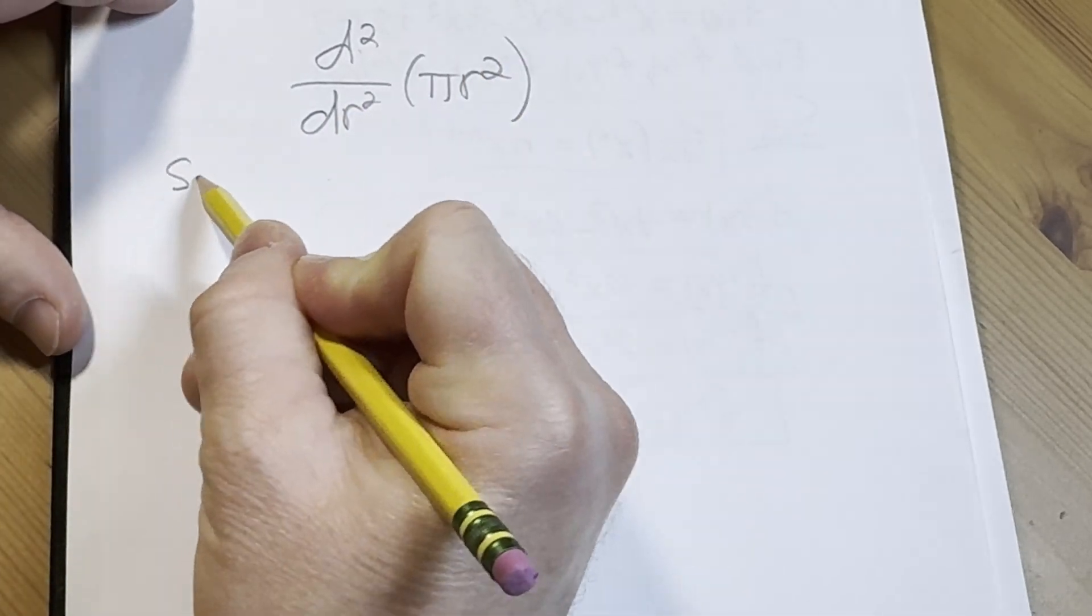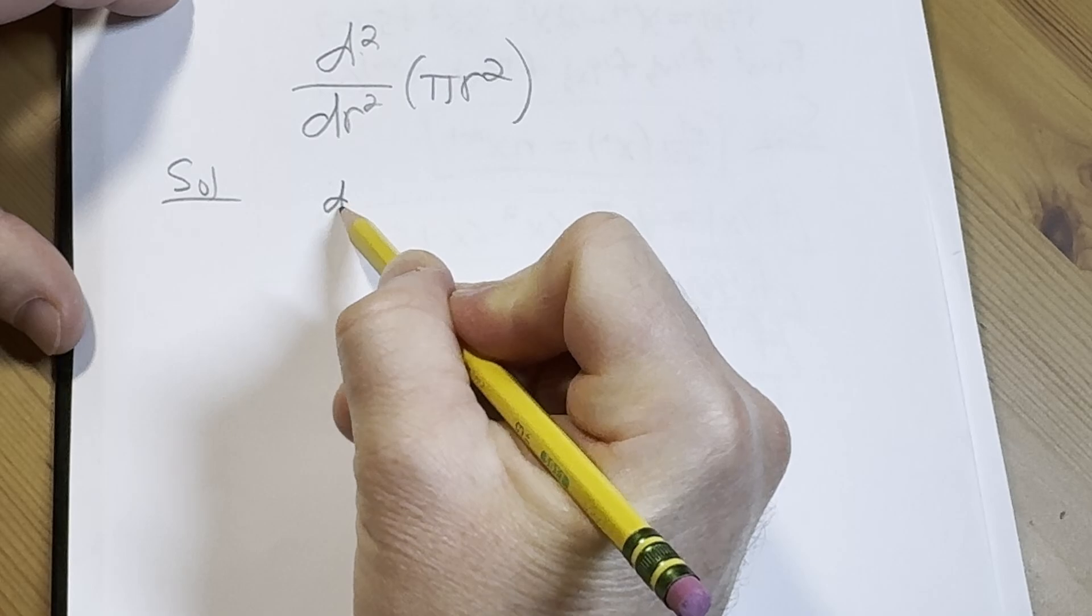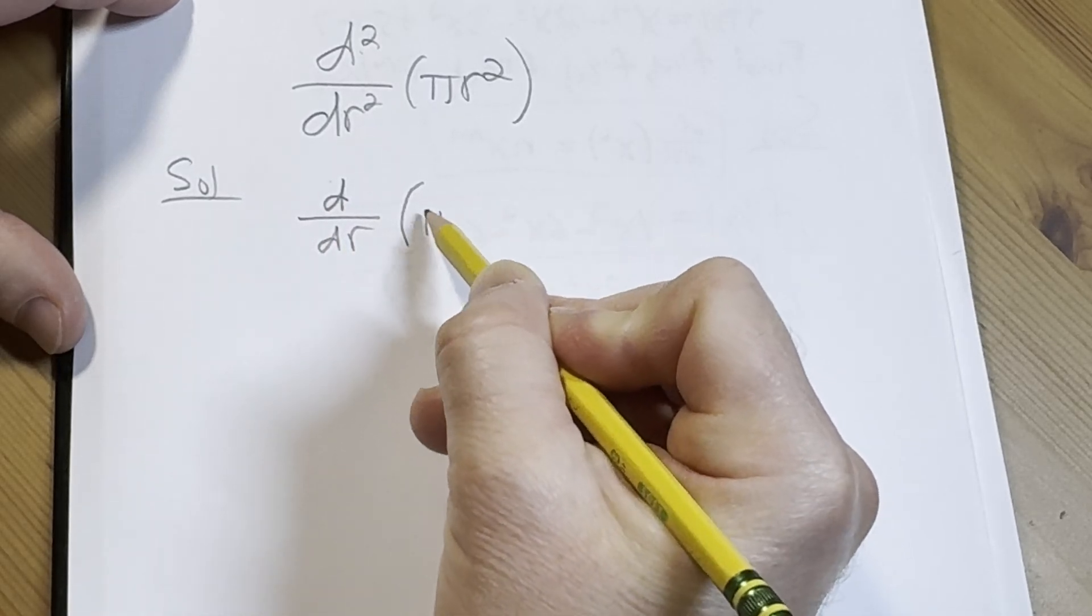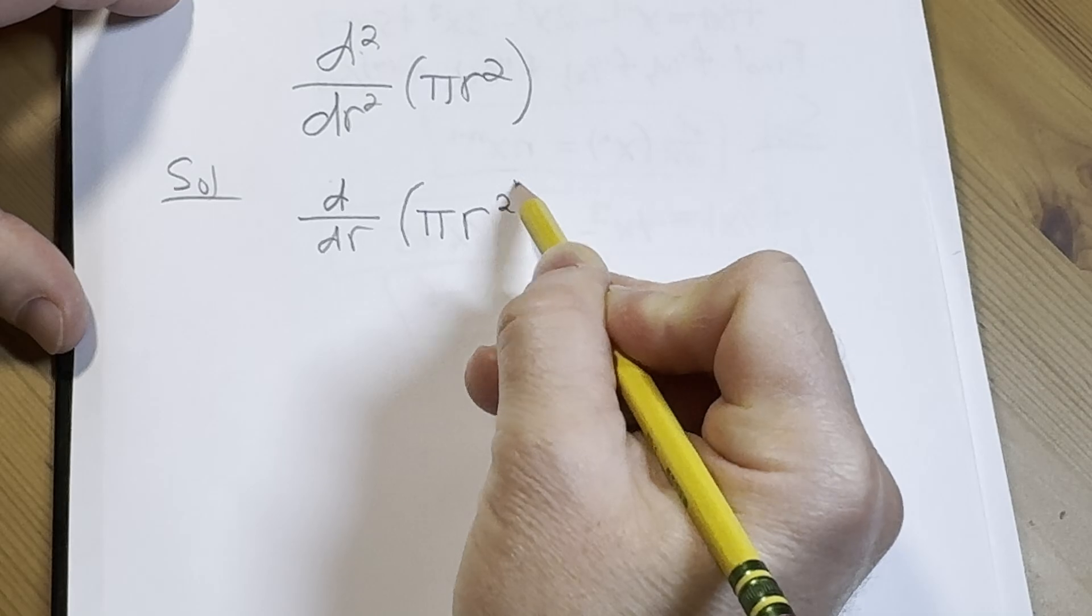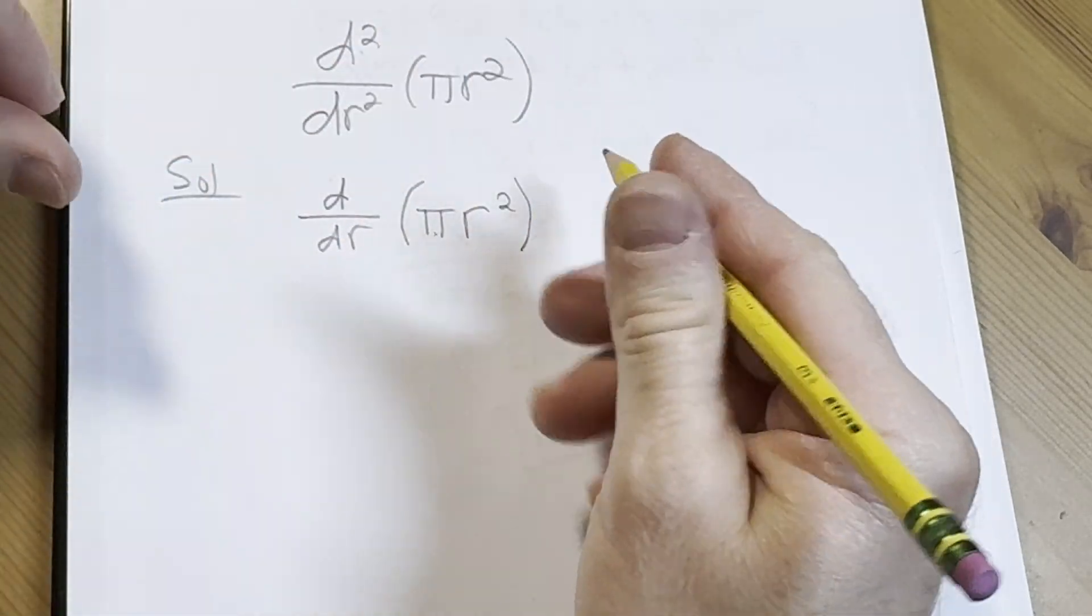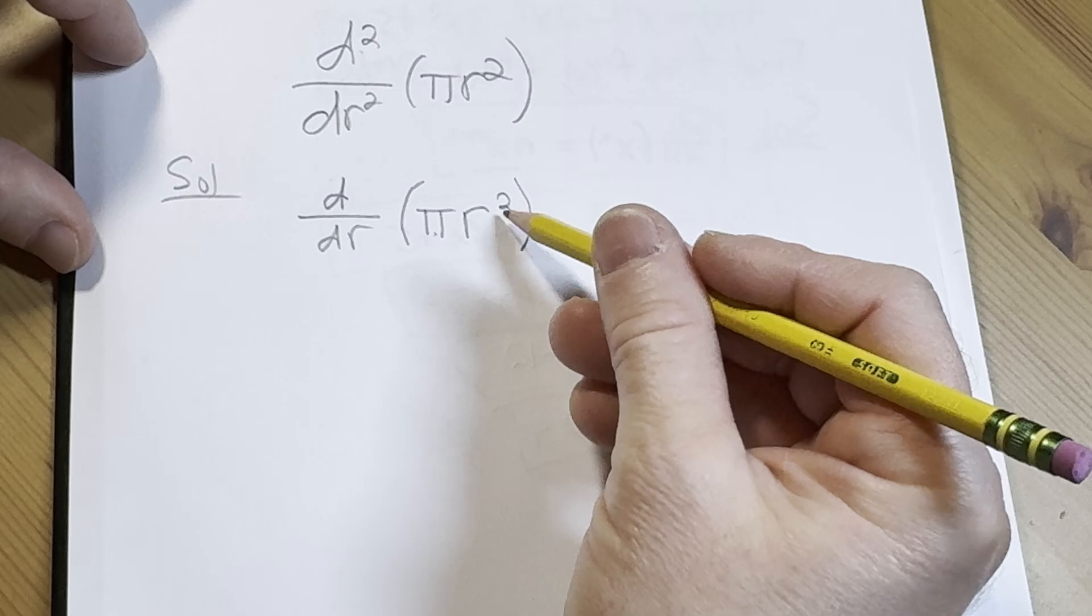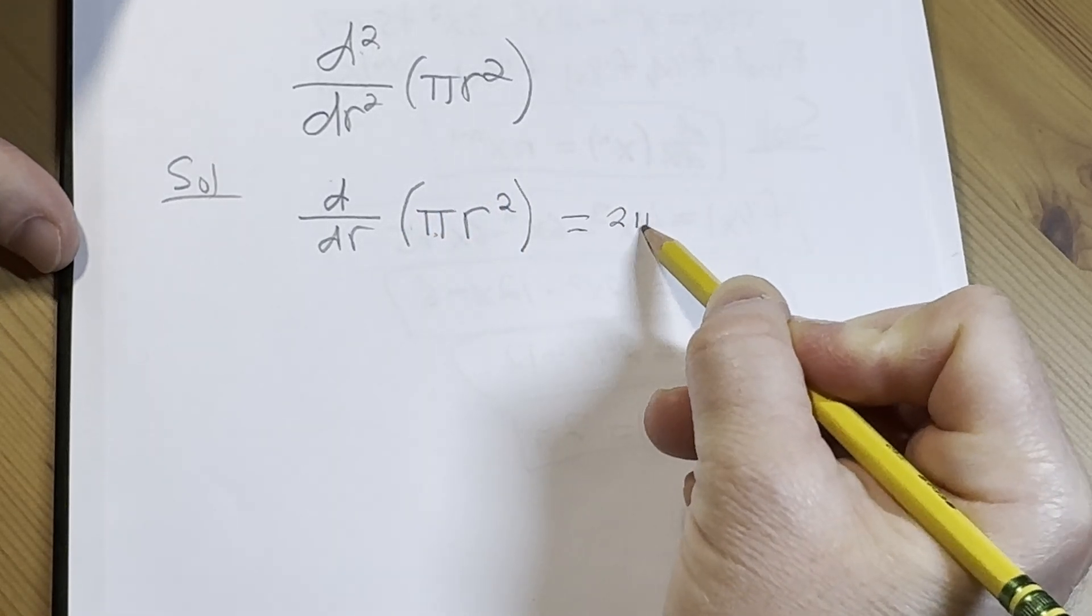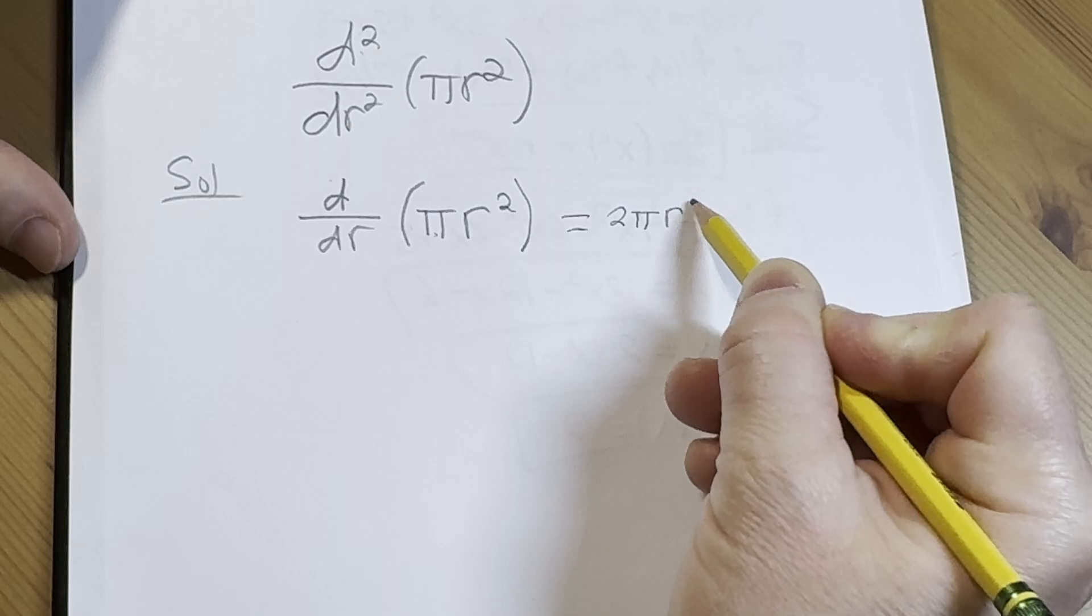Let's start by finding the first derivative, so solution. We want the derivative with respect to r of pi r squared. Pi here is a constant, so it's essentially hanging out. We're differentiating with respect to r, so we're going to bring that two down, put it in front of the pi, and then subtract one from the exponent, so we have r to the first power.